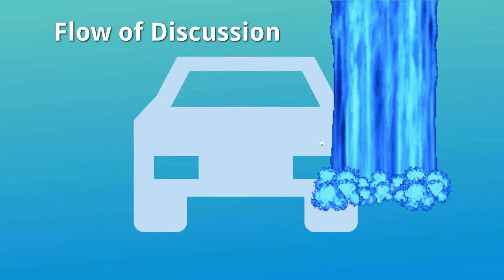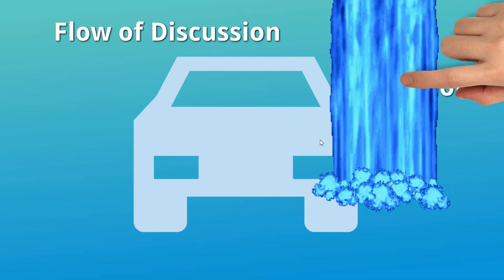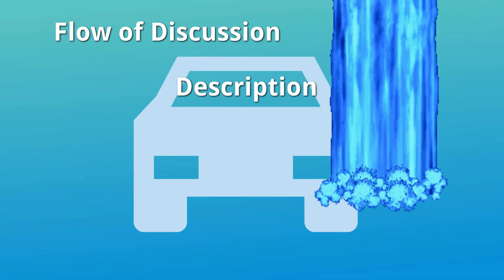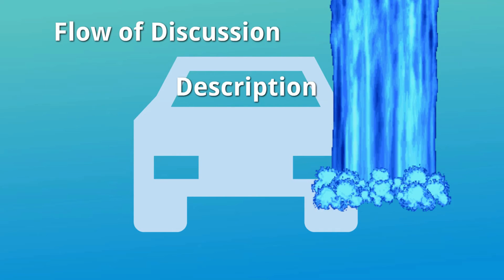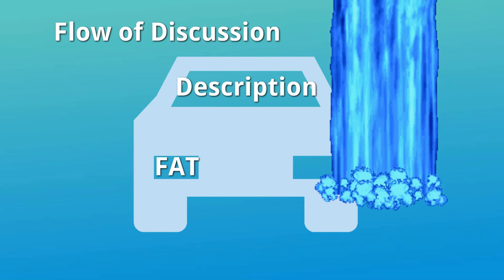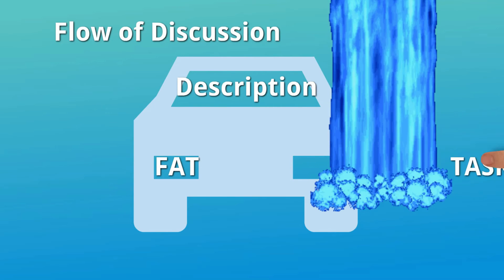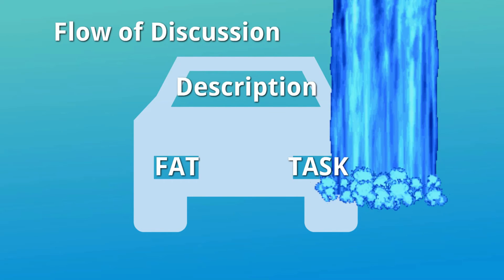Let us now proceed to our main point. But before we go to our main point, let's have the flow of discussion. How will our flow of discussion be? First, we'll be talking about a stage and its description. By the way, we'll be having six stages. So one stage, we'll be talking about description, the FAT—the feelings, actions, and thoughts on that stage—and the task for that specific stage.